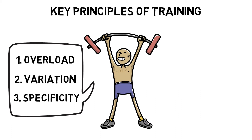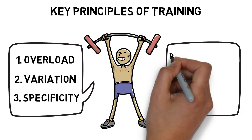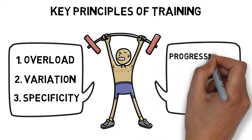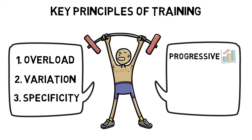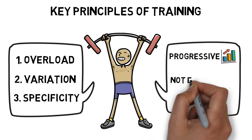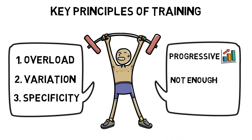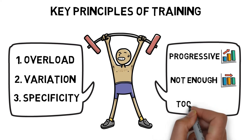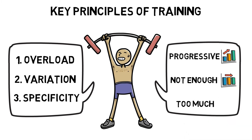All of these principles help promote adaptation, which is the human body's ability to respond and change to various exercise stimuli. Generally speaking, if stimulus progressively increases, then we would expect adaptation to occur and performance to increase. If there is not enough stimulus, then we would expect performance to plateau or start to decrease. And if there is too much stimulus, then there is a risk of maladaptation, which could also decrease performance levels.